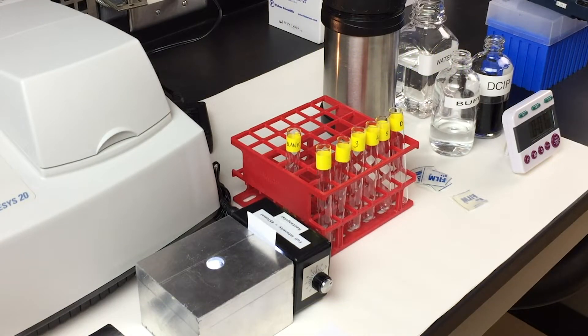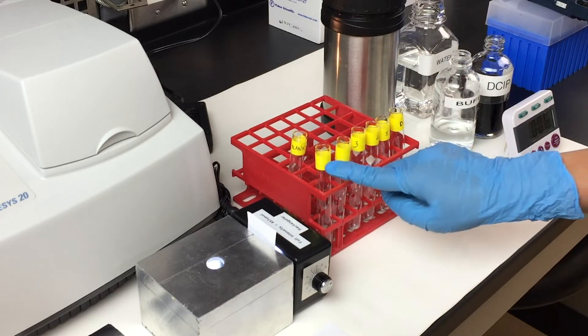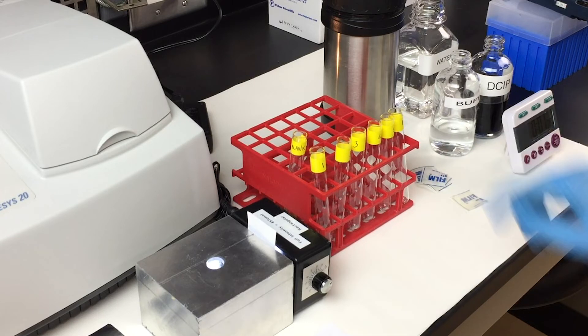In the next set of experiments, we will examine the effect of varying light intensity on photosynthetic activity. For this experiment, we would have one blank and a set of six tubes, labeling one to five, and one tube for the dark experiments, which I will elaborate later on.